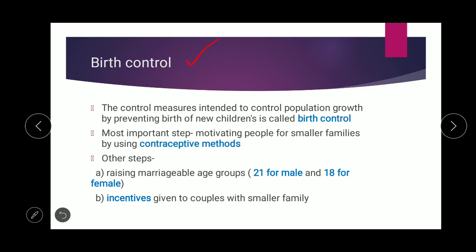Birth control means the process by which we can control births of new babies, associated with reducing population explosion. The most critical method is controlling population growth by preventing the birth of new children — if we can control births, the population can be maintained at a stable level. This can be done by motivating people for smaller families using contraceptive methods.